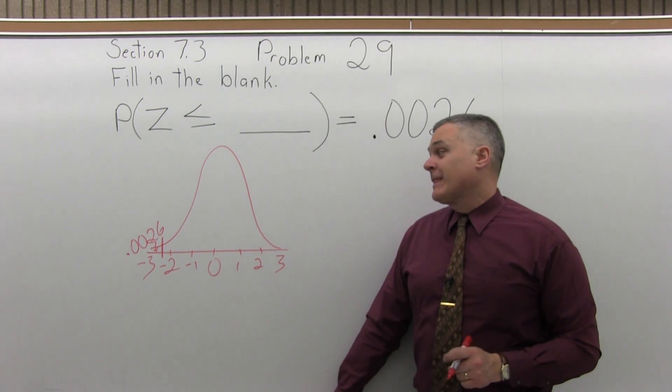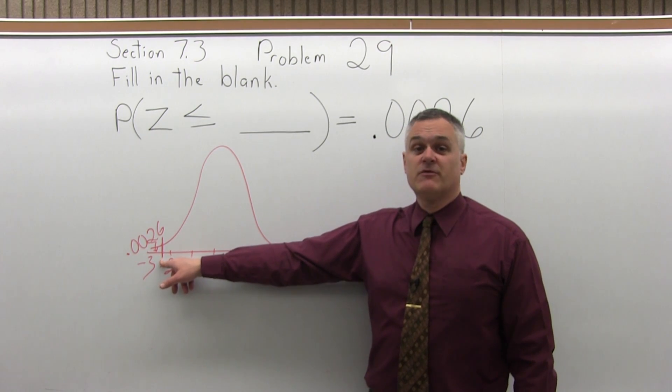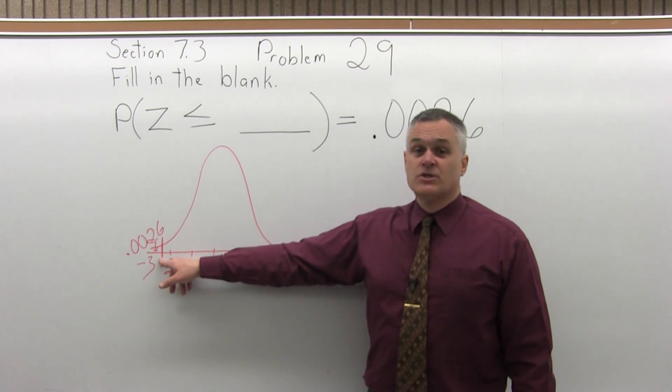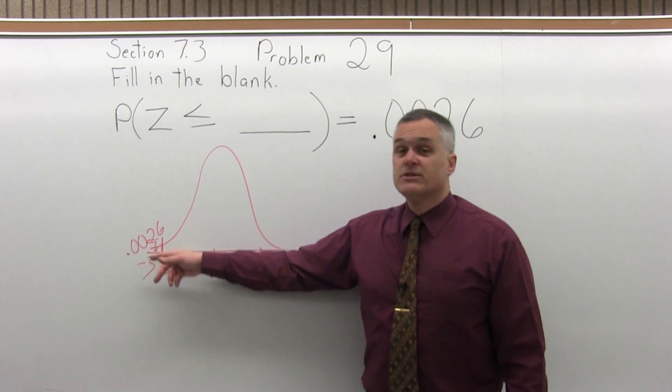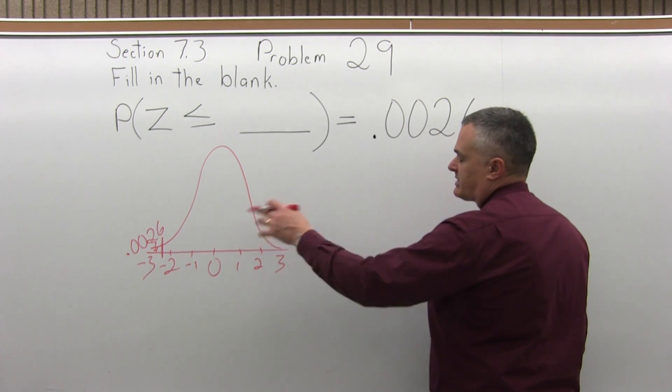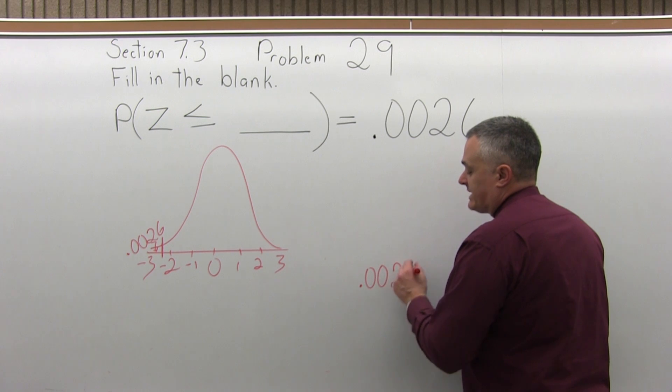So the standard normal chart is set up to tell us the probability of being to the left of or less than what we've looked up. So what we want to do is try and find .0026 somewhere in the middle of the chart. And the chart does go in order. That's going to be way on one end because that's very small, .0026.